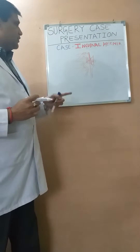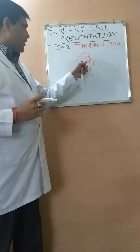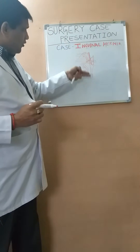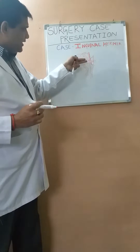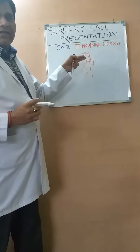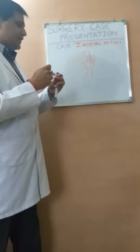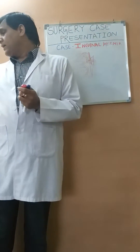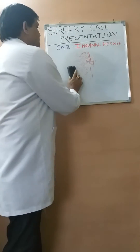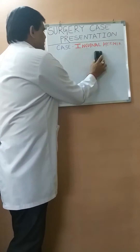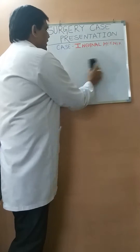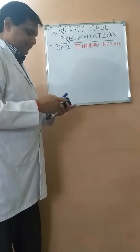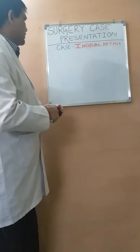Everything up to this particular part is called hernia — a protrusion of a part or whole of the viscera through the wall of the cavity containing it. This is exactly what we understand by hernia. A similar thing happens in the case of inguinal hernia.